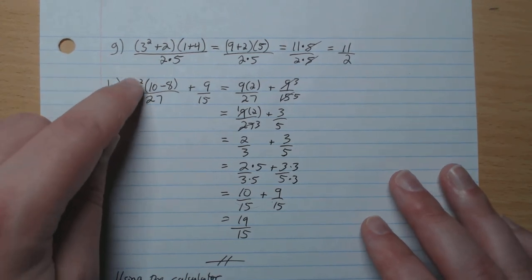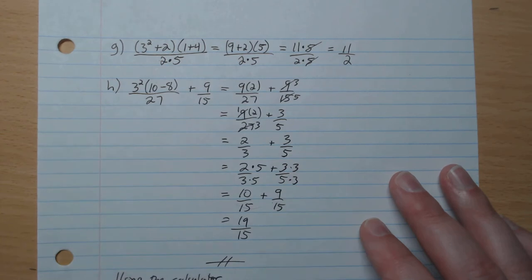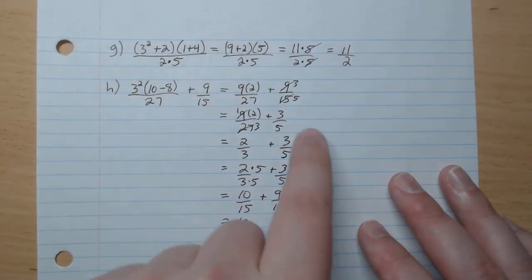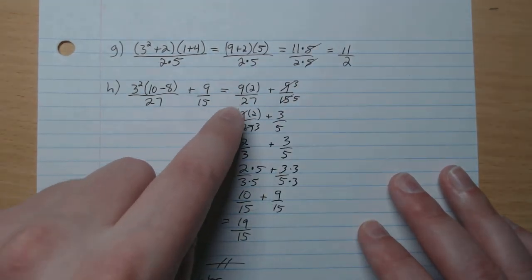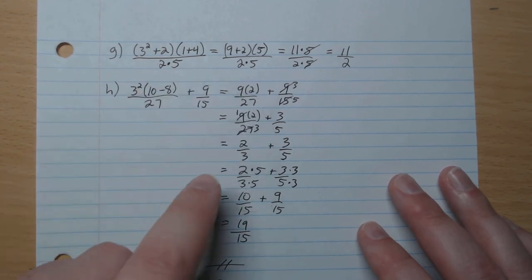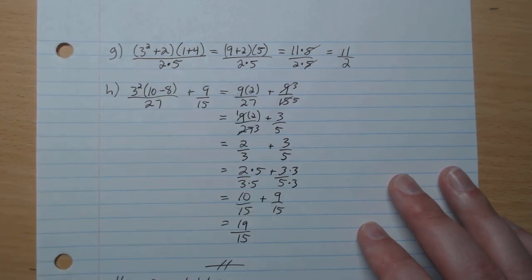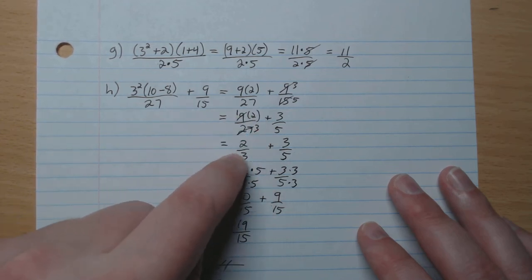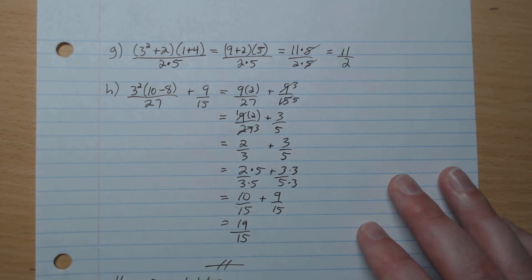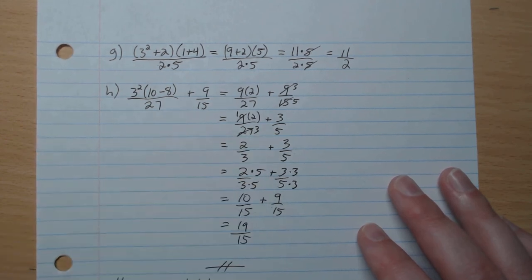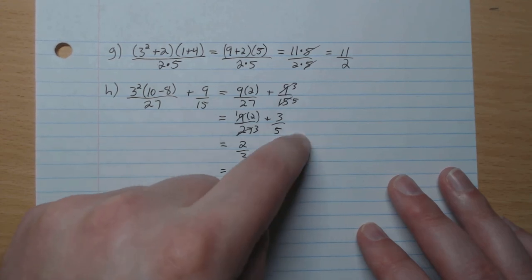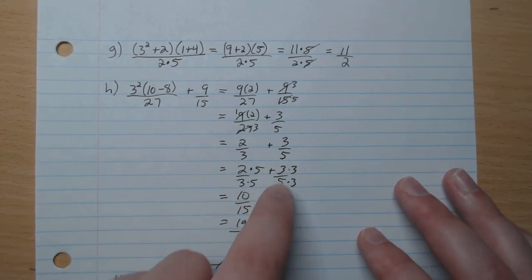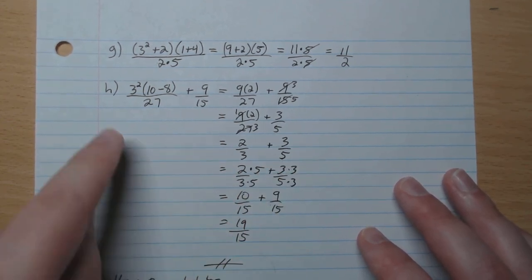H. 3 squared is 9. 10 minus 8 is 2. Divided by 27. 9 and 15. 3 is in common. 3 over 5 is left. 9 over 27. We can cancel out the 9. What's left is 3 on the bottom, 1 on the top. Times 2. So 1 times 2 is 2. 3 is left. So we have 2 thirds plus 3 fifths. So we're using our fraction videos here. We're going to go times 5 here to have common denominator of 15. And times 3 here to get common denominator of 15. So here we have 10 plus 9. So 19 over 5 is our final answer.